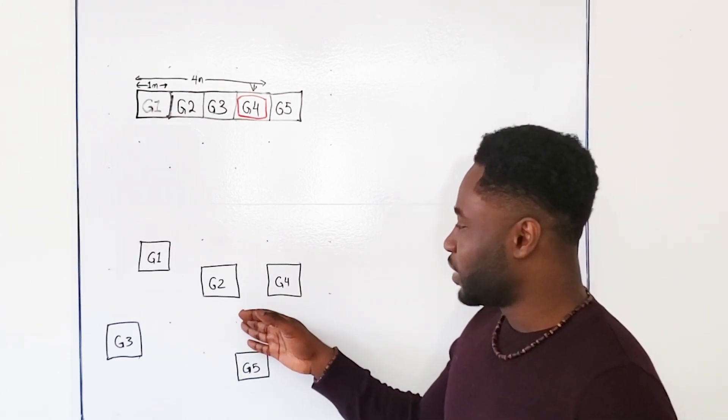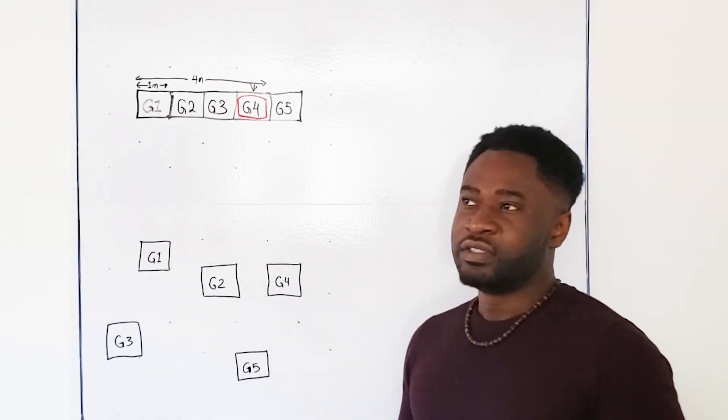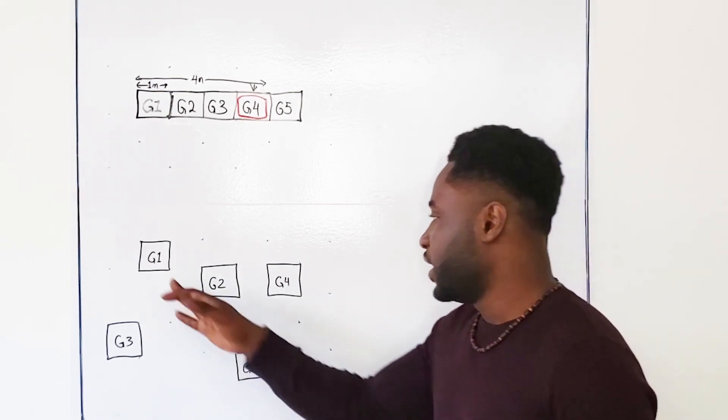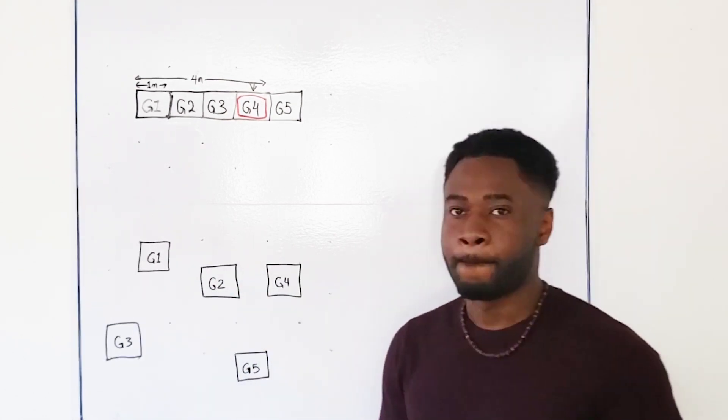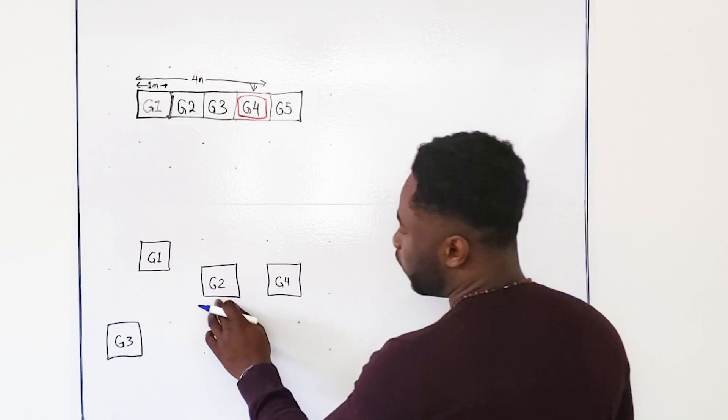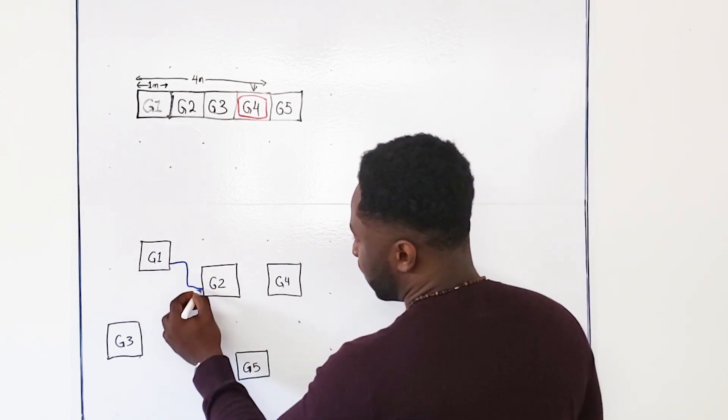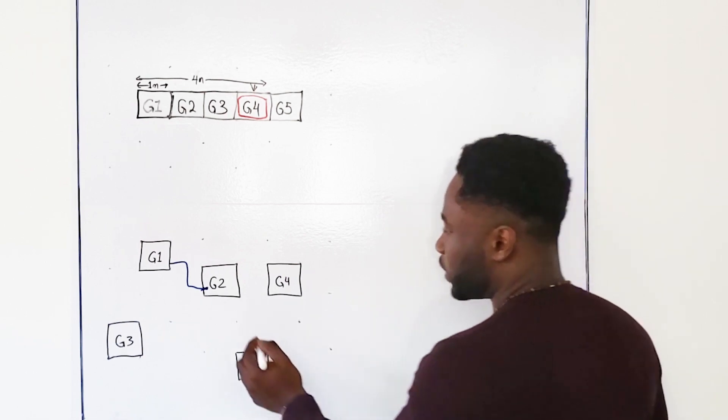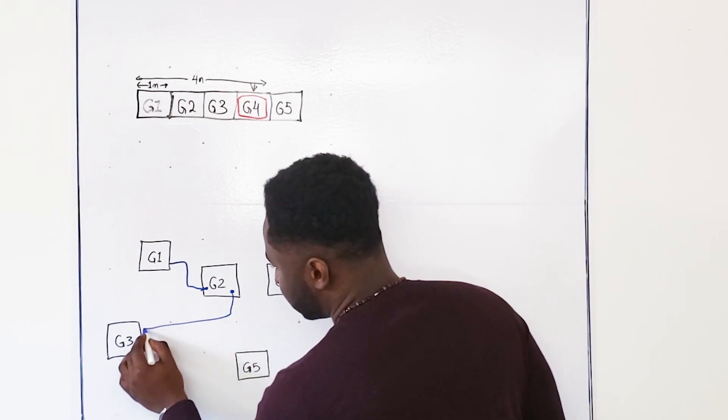But now it makes it a little bit more difficult to keep track of where each and every single individual is. So now suppose Jane came up with a brilliant idea. Her idea is that each and every single guest will be responsible for knowing where one other person is. So as an example, guest one here is responsible for knowing where guest two is. So this guest right here has to know where guest two is at all times. And now it's guest two's responsibility to know exactly where guest three is at all times.